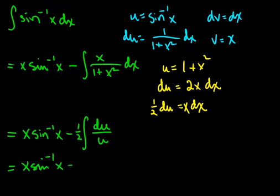So we carry the first term down, x sine inverse of x, then we have 1 half, natural log of the absolute value of u, which is just 1 plus x squared, and plus c.